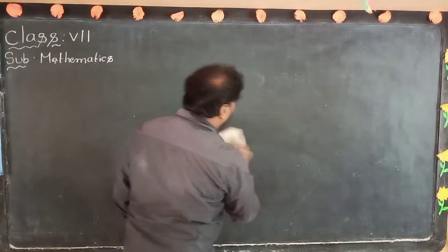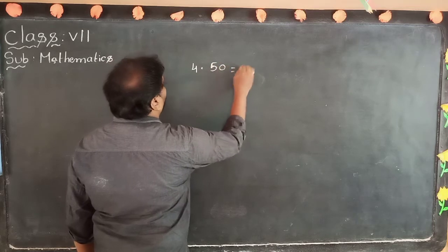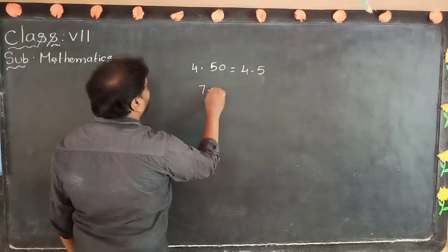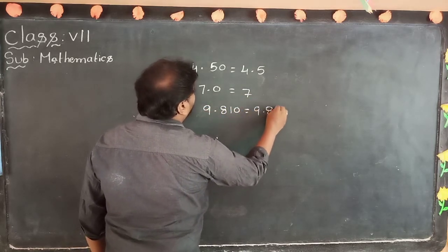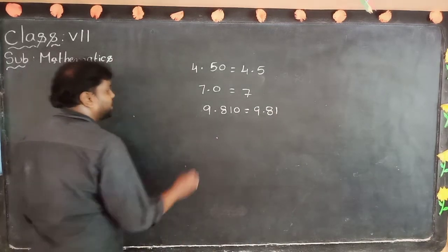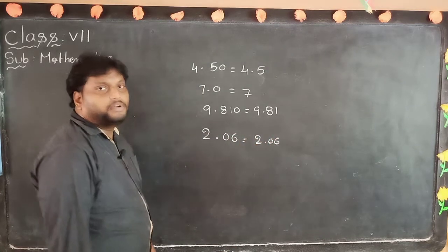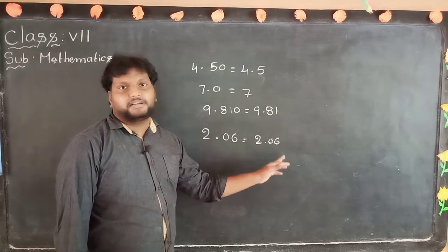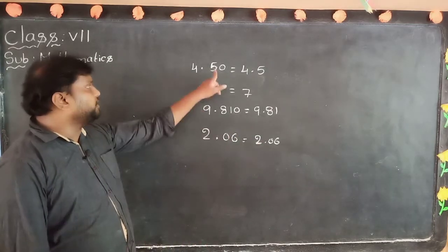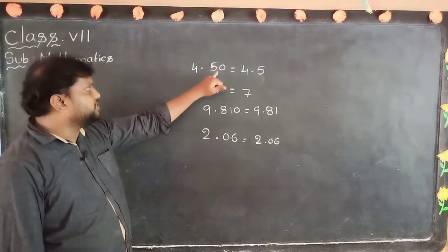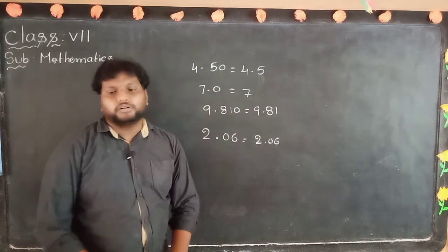One more thing: point after zero is not valid. For example, 4.50 equals 4.5. Similarly, 9.810 equals 9.81. But in a different case: 2.06 equals 2.06 only — because that zero is not in the last place; after the zero there is one more number, so it is compulsory to mention that zero. If in the decimal part zero is at the end with no value after it, no need to consider that zero.